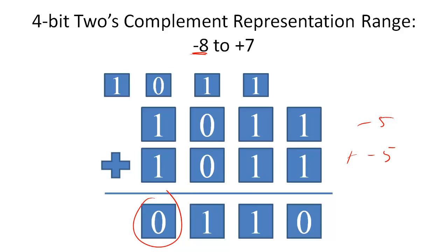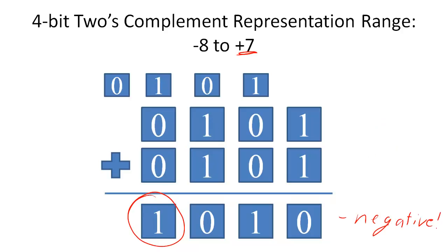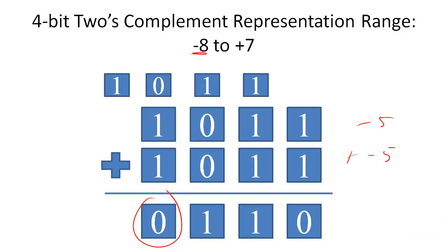This problem is called overflow. More formally, overflow is an error where the magnitude of the sum of an addition operation is greater than what we can represent with the representation. As we just saw, when the magnitude of an addition operation in 2's complement representation was too great, the positive number was wrongfully interpreted as a negative number, similarly for negative numbers being represented as positive numbers.